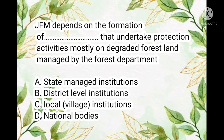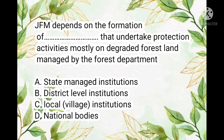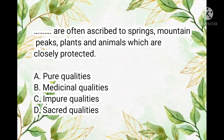Question number fifteen: JFM depends on the formation of which body that undertakes protection activities mostly on degraded forest land managed by the forest department? The correct answer is option C — local village institutions. Question number sixteen: what are often ascribed to springs, mountains, peaks, plants and animals which are closely protected?